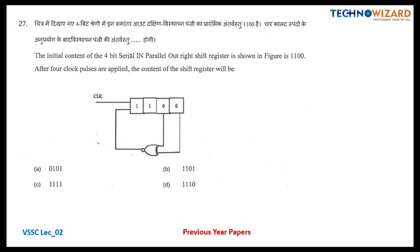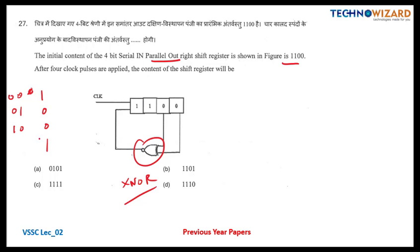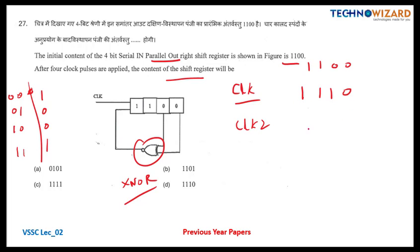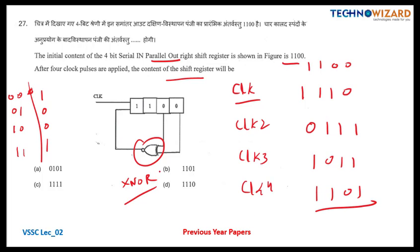Question number 27: the initial content of a 4-bit serial-in parallel-out right shift register is 1100. There is an XNOR gate feedback. The XNOR truth table: for 00 output is 1, for 01 output is 0, for 10 output is 0, and for 11 output is 1. After clock 1: 1110. After clock 2: 0111. After clock 3: 1011. After clock 4: 1101. So 1101 is the correct answer — option B.